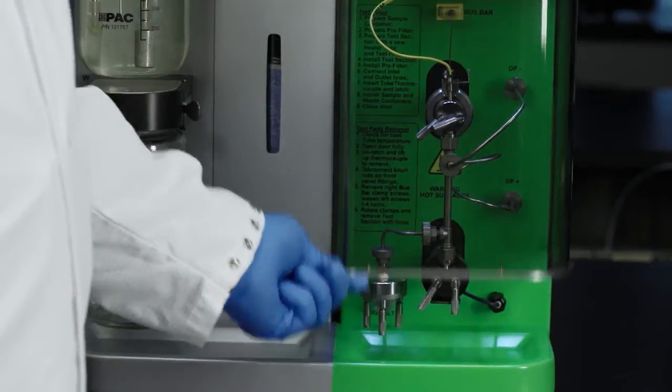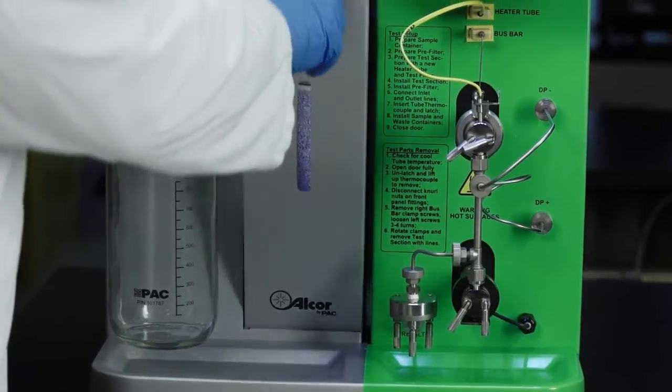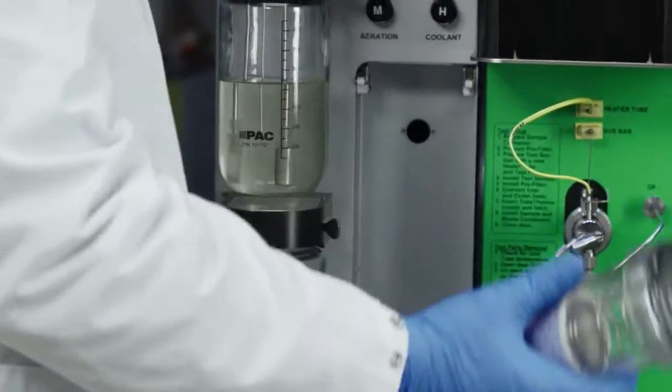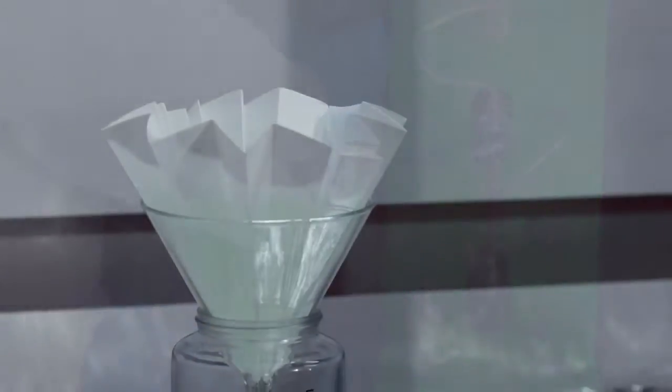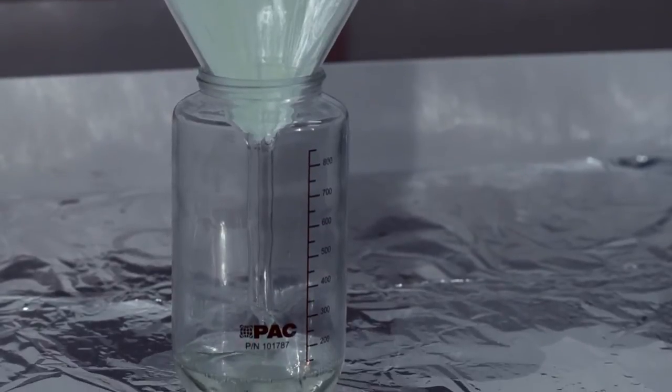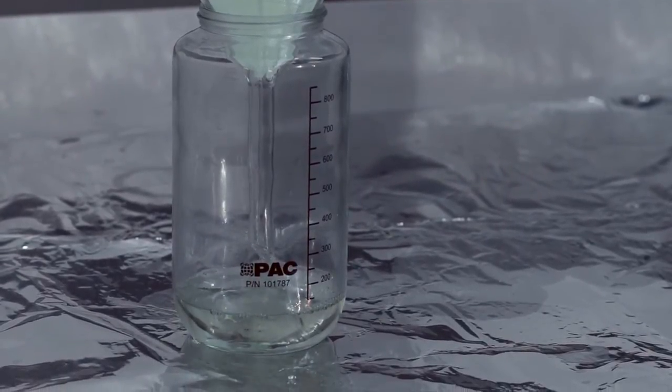If you're familiar with previous generation Jephthahs, you'll recognize plenty of similarities, and what isn't similar is designed to be intuitive and easy to understand. To get started, you'll filter the jet fuel directly into the sample container. This process hasn't changed from the Jephthah 3. Make sure you perform this step in a laboratory hood.